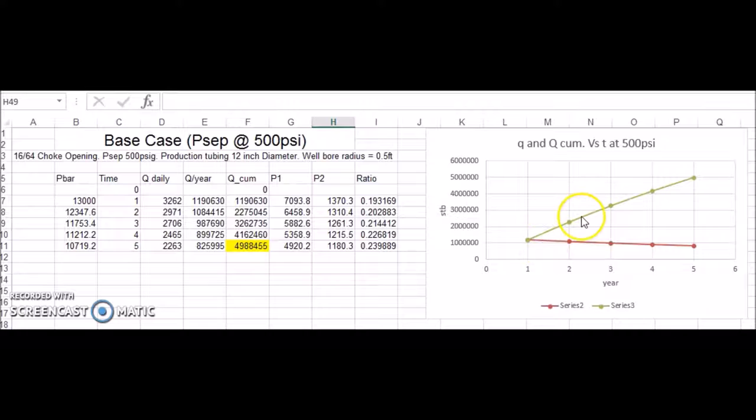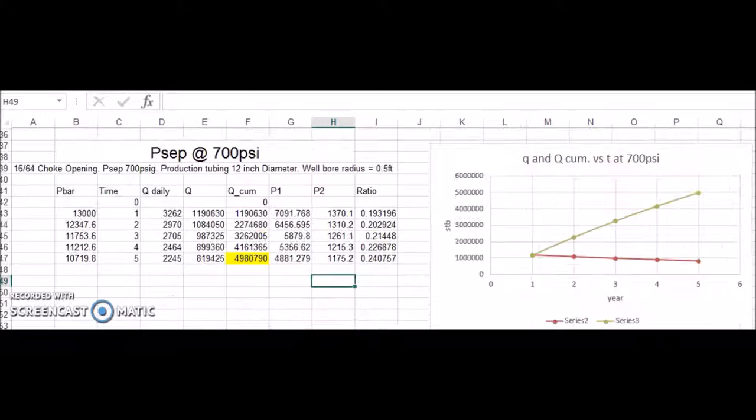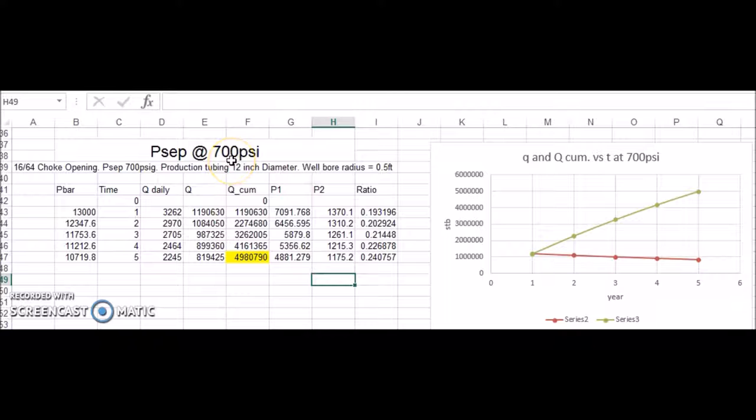And over here we have our production and our cumulative production versus time. And then we went ahead and ran simulation again at the lower separator pressure of 300 psi. And again, just shy of 5 million barrels after 5 years. And then we ran it one more time for a higher separator pressure of 700 psi. And then once again, cumulative production is just shy of 5 million.